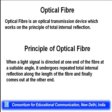We start with the definition of optical fiber. Optical fiber is an optical transmission device which works on the principle of total internal reflection. Optical fibers are used to transmit signals, and they work on the principle of total internal reflection. When a light signal is directed at one end of the fiber at a suitable angle, it undergoes repeated total internal reflection along the length of the fiber and comes out at the other end.